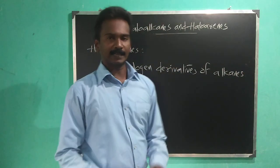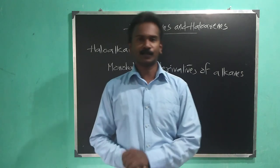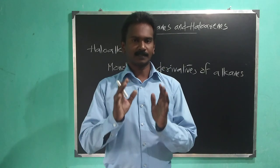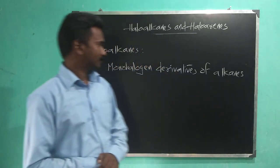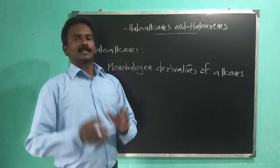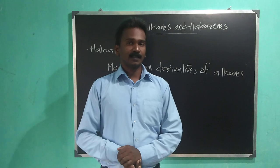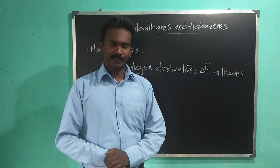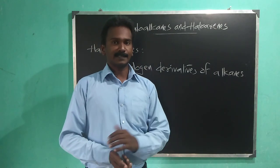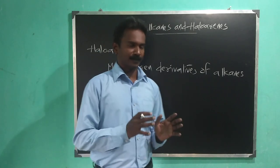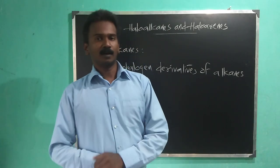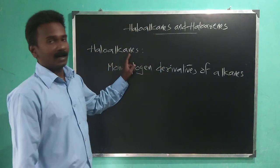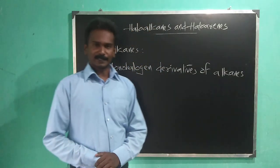We know alkanes are the saturated hydrocarbons with carbon-carbon single bonds. When an atom of hydrogen is replaced or substituted by a halogen atom like fluorine, bromine, or iodine, we get Haloalkanes.